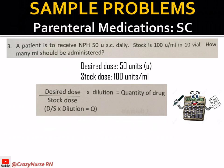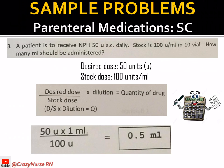Using the formula D over S times dilution equals Q: we have 50 units divided by 100 units times 1 ml. Cancel the units, so 50 divided by 100 times 1 gives 0.5. Retain the ml since it was not cancelled. The answer is 0.5 ml — we need to inject 0.5 ml subcutaneously to our patient every day.